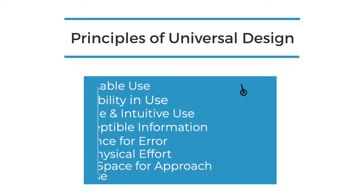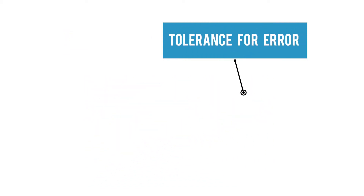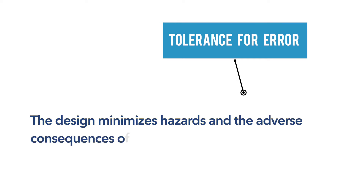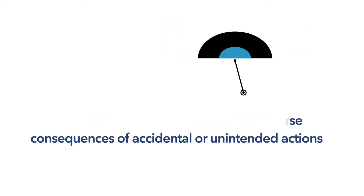The fifth universal design principle is Tolerance for Error. It is defined as the design minimizes hazards and the adverse consequences of accidental or unintended actions. When applied to a design, this principle ensures users are not harmed and do not make mistakes that could cause injury.